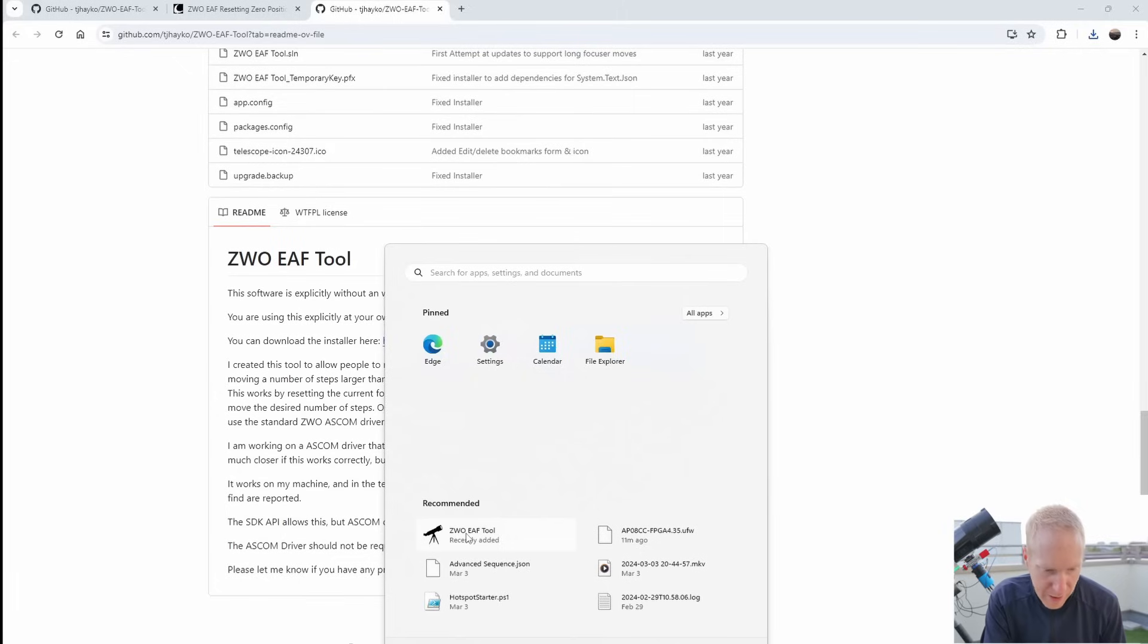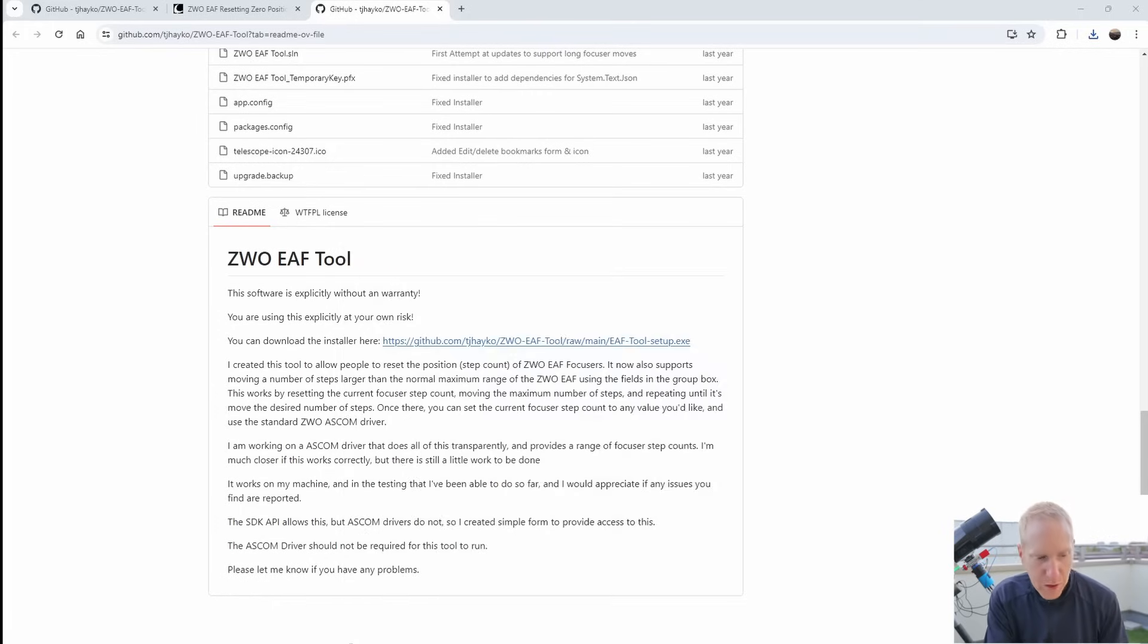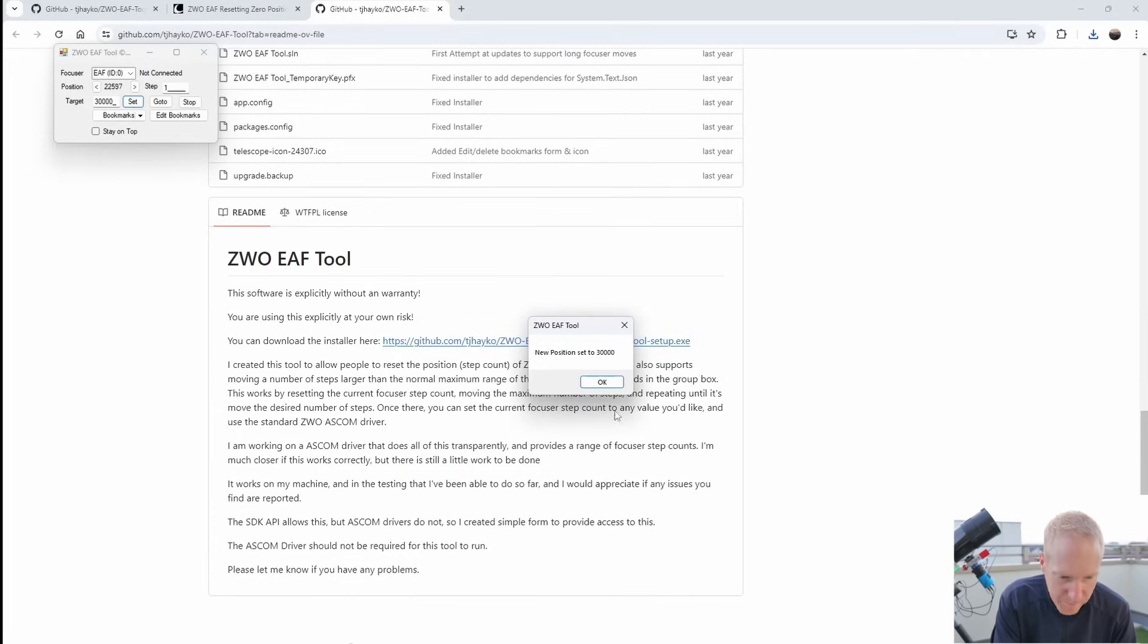And once that's done, if you go to your start menu, you should have like a ZWO EF tool. You can search for EF. And there it is. We'll click that. And then I can tell the ZWO EF. So I can first select it. Here it is. So it is connected. And I can tell it, okay, you're not on step 22,000 in my case. But earlier last night, it was actually at zero or 1,000, whatever. You're not on that step. You are at step 30,000, for instance. So halfway travel. And if I set it, now the new position is 30,000.